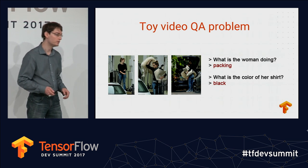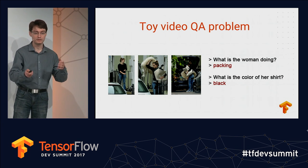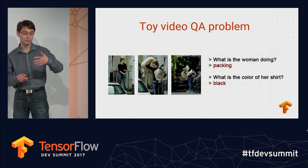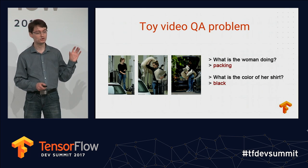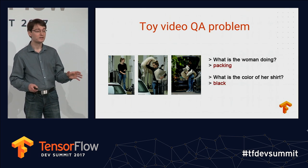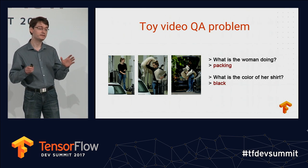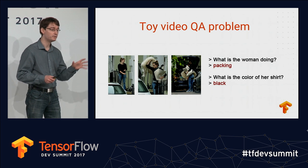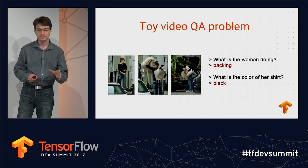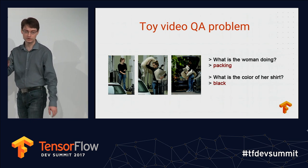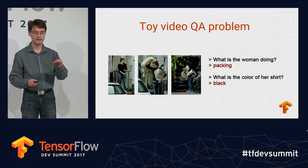For example, we have a video of a woman packing objects into a car. You can ask what is the woman doing, what is the color of her shirt, and the answer should be a single word. So we'll build a deep learning model that takes as inputs the video as a sequence of frames — about 40 frames in order — and the question, and the model should output one word: the answer.